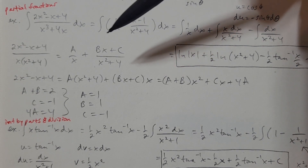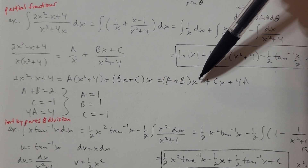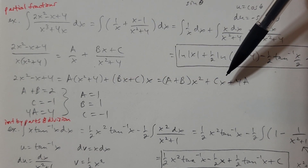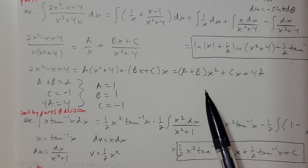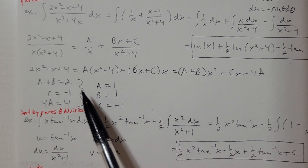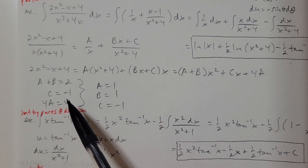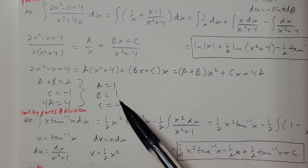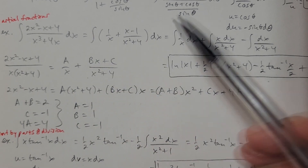We need to find A, B, and C. Multiplying both sides by x times (x squared plus 4), I get A times (x squared plus 4) plus (Bx plus C) times x, which expands to (A plus B) times x squared plus Cx plus 4A. Matching coefficients: A plus B equals 2, C equals negative 1, and 4A equals 4. So A equals 1, C equals negative 1, and since A equals 1, B also equals 1.